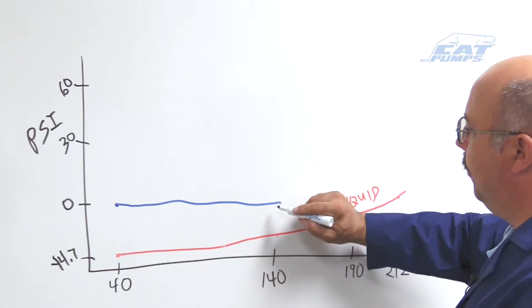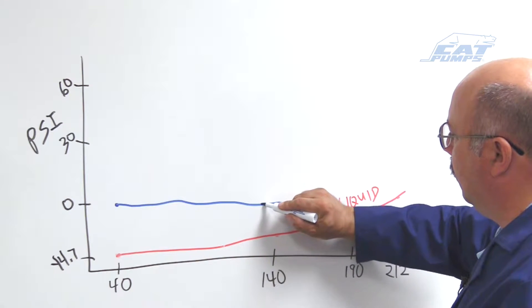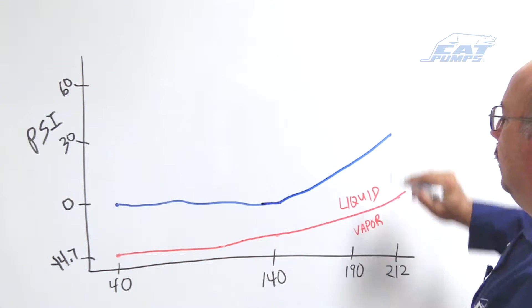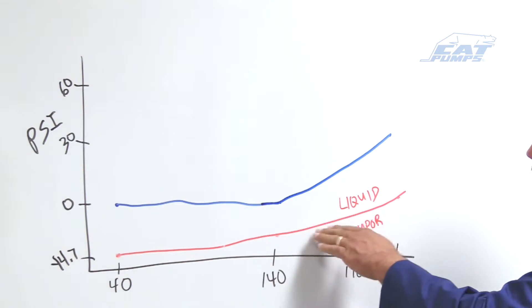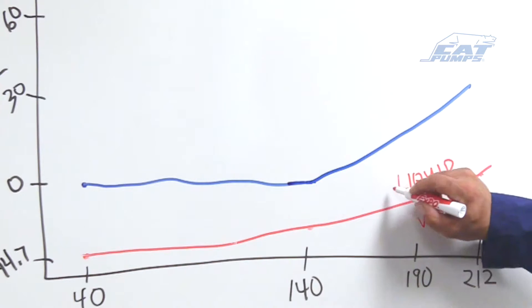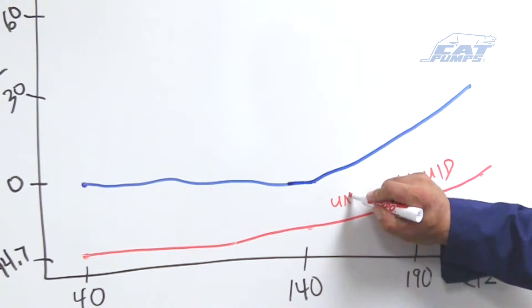So that at about 130-140 we want to take this curve, this line, and bend it up. So that it stays away from this liquid vapor line. And so we want to come in here, we want to call this unsafe liquid.